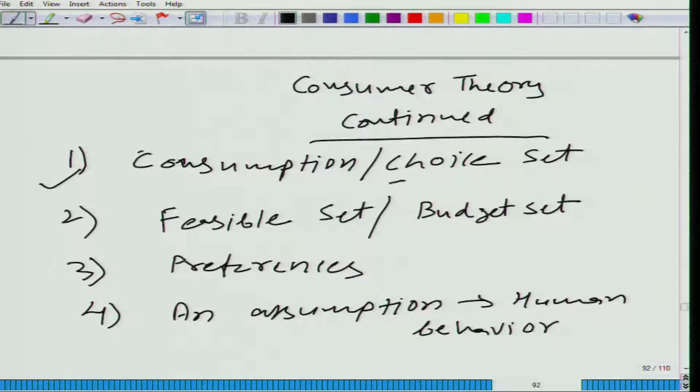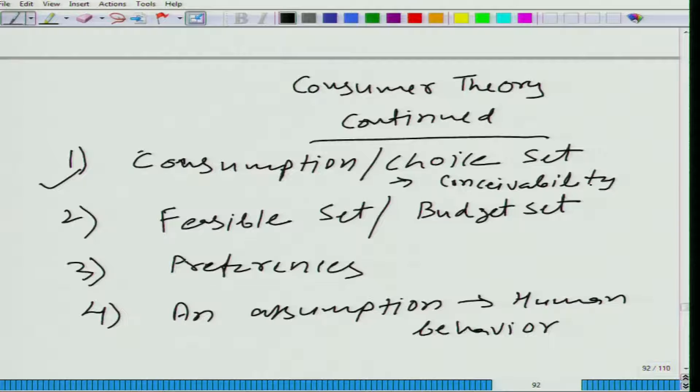Just as recap, here the focus is on conceiving. Can you think about a bundle? If you think about a consumption bundle, then that bundle should be a part of your consumption set. So the idea is that you should be able to conceive. How about here? The idea is that you should be able to achieve or you should be able to afford.